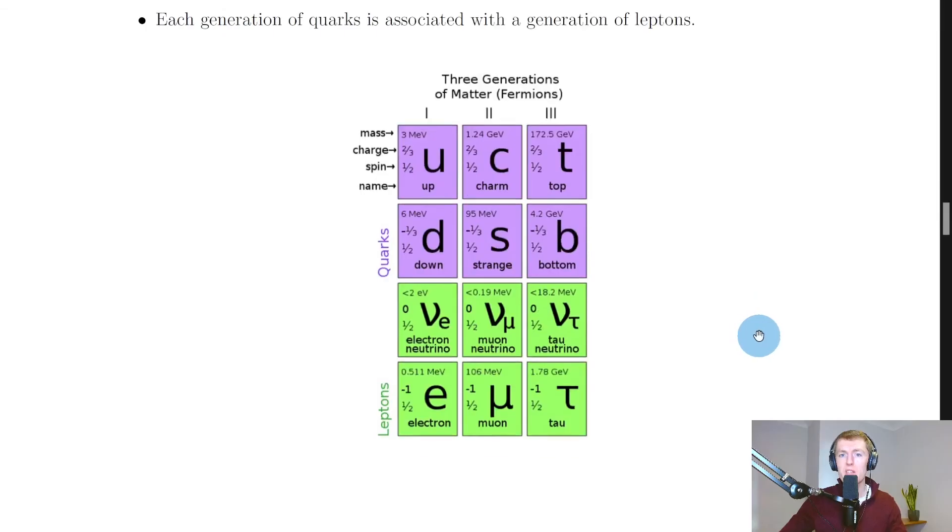So if you have a look at this picture here, you'll see the three generations of matter, i.e. the fermions here. We've got generation one in the first column, generation two in the second column, and generation three in the third column. So we have both quarks and leptons in each generation. And each generation is based on some of the properties here like charge and spin.